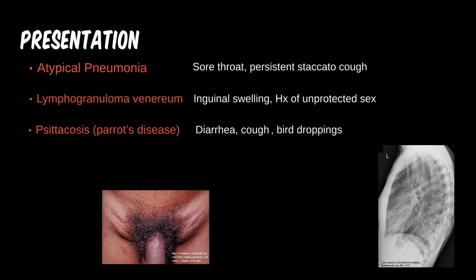A worker at a meat and poultry plant presents with fever, cough, and muscle aches beginning two days ago; three other workers have similar symptoms. Again, this is psittacosis. Though rare, psittacosis can have such variable presentations that another question seemed in order — poultry, even already dead, is still a bird. This processing plant can spread the bacteria from diseased birds to others rapidly and has led to at least one outbreak this year alone.